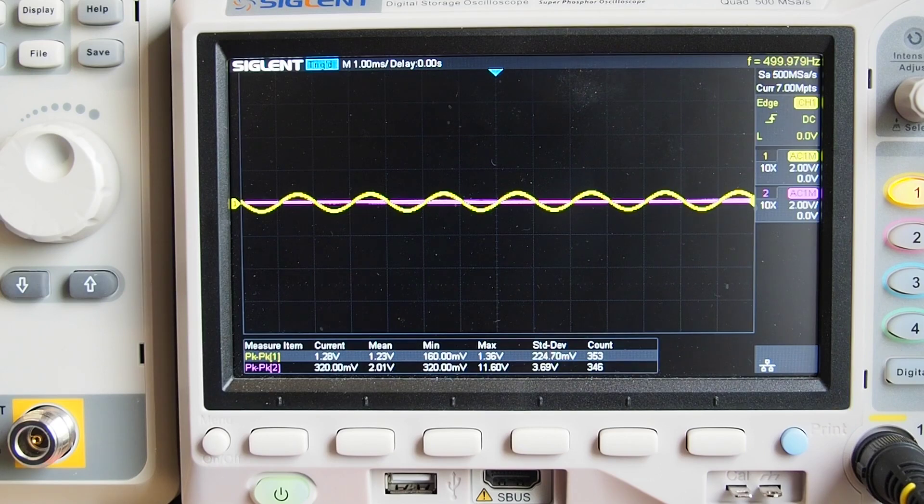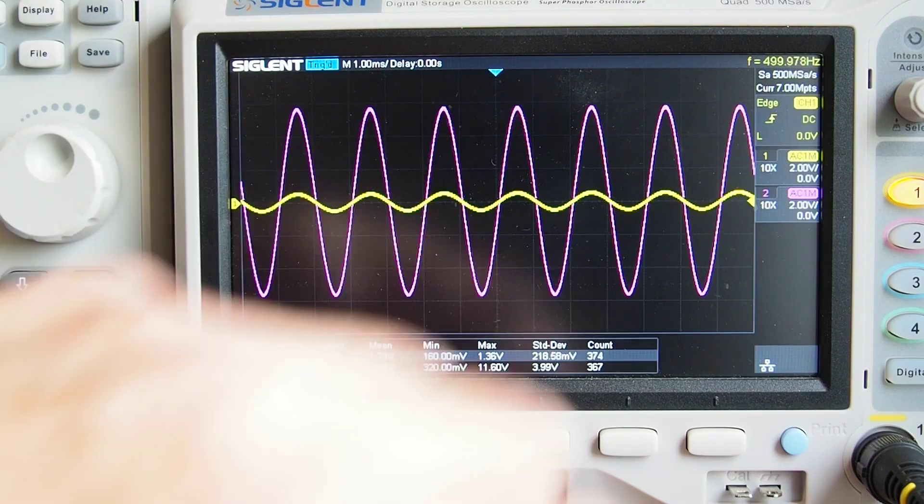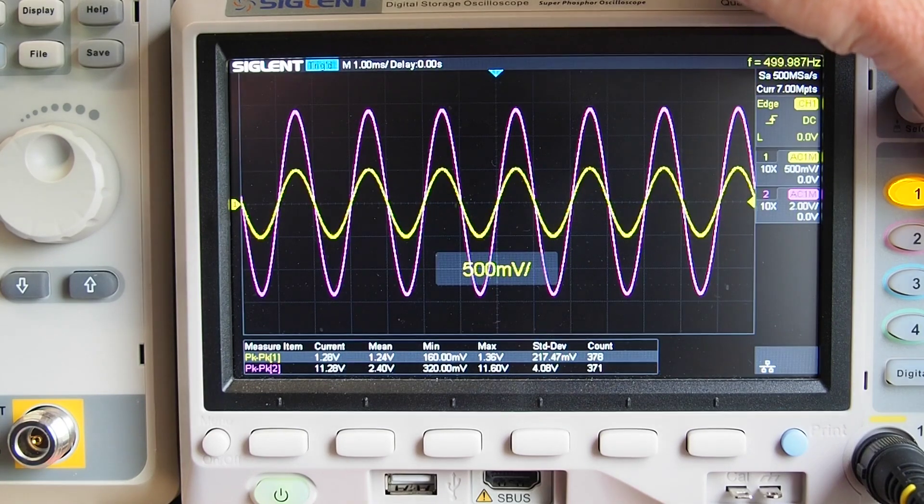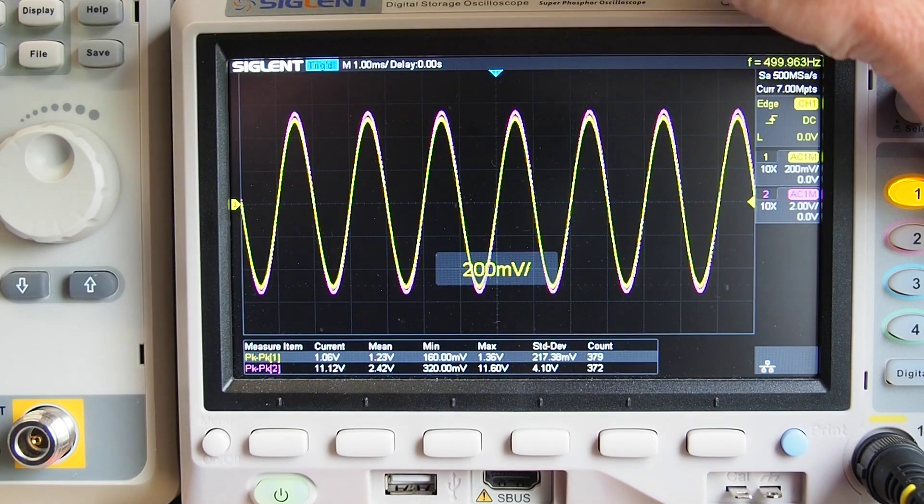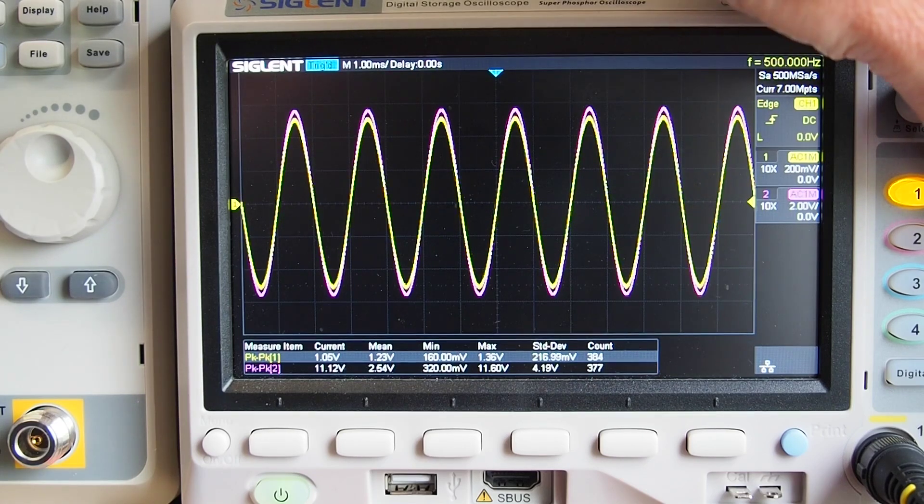So let's now attach the second purple channel to the output like so. You can see there we've got substantial amount of gain. I think the important thing to say is if I just turn down the volts per division, you can see that those two signals there are actually most definitely in phase.